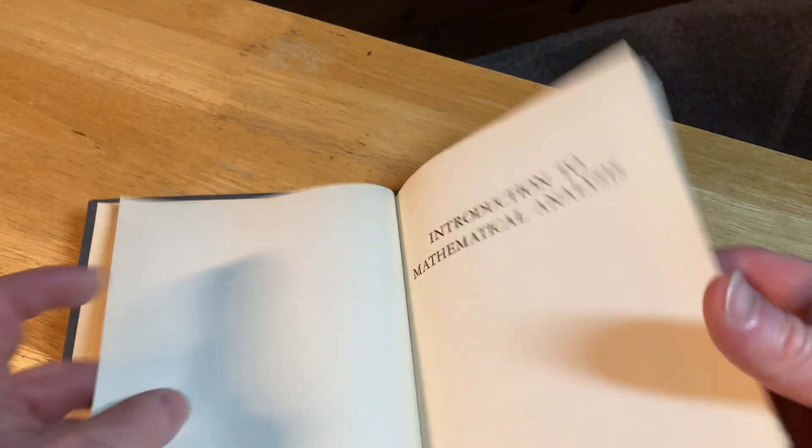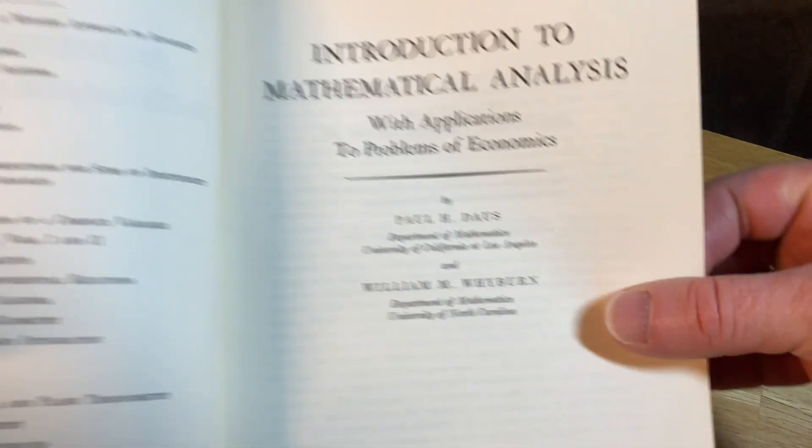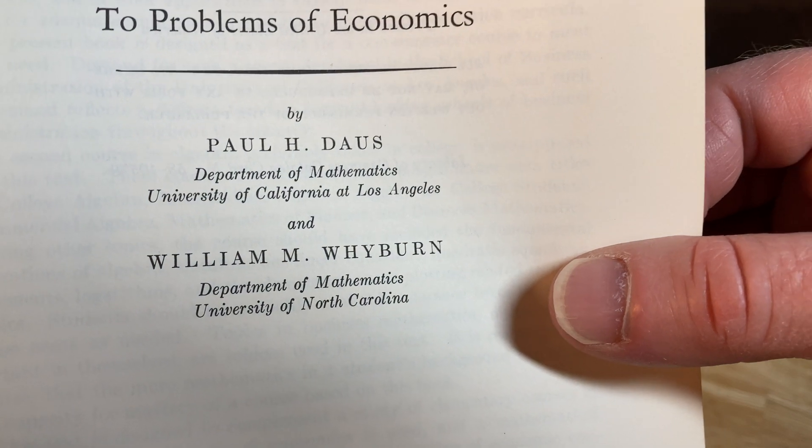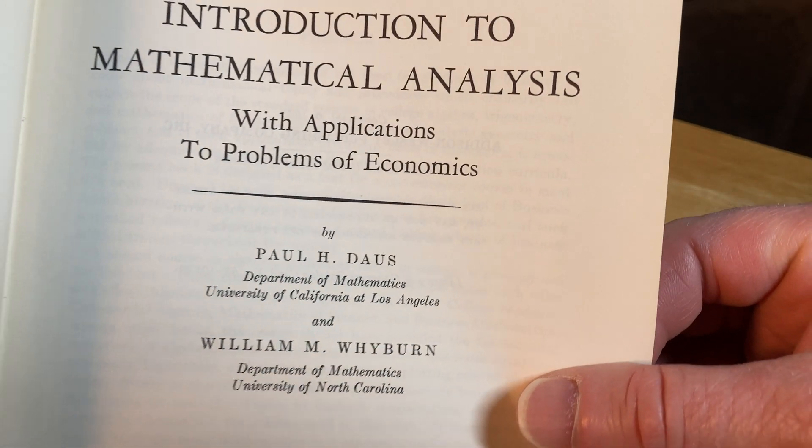This is an ex-library book. And here are the authors, Paul H. Doss and William M. Wyburn. This one has Applications to Problems of Economics.